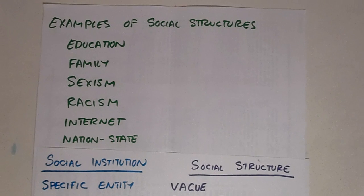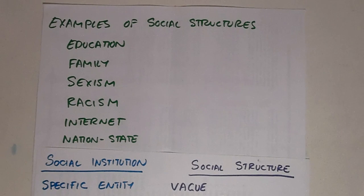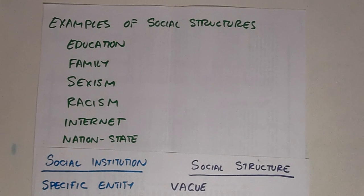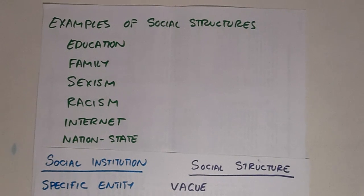A nation-state is an interesting example because states and nations are sometimes considered institutions, but in many ways they're also social structures. When we talk about a nation-state as a social structure, we're not thinking in terms of political boundaries. We're thinking of the essence, or the identity — almost the ethnicity — of the people that identify with that nation-state.